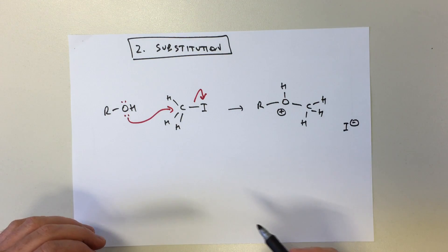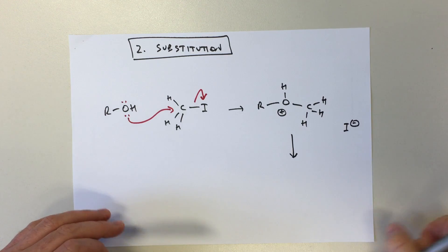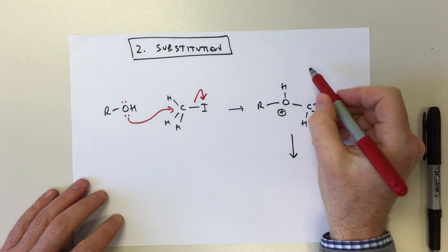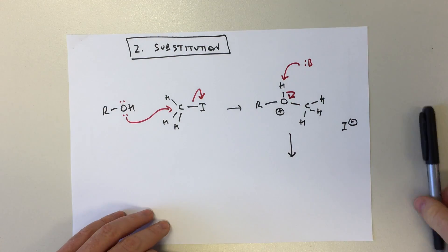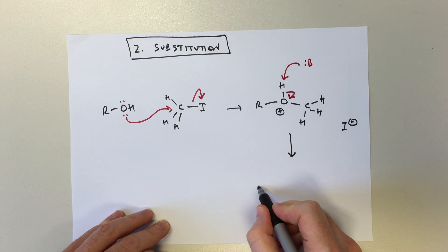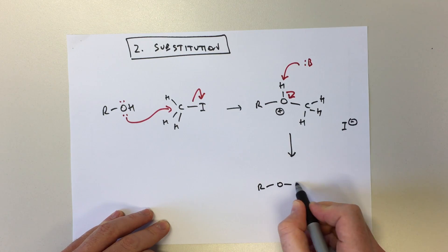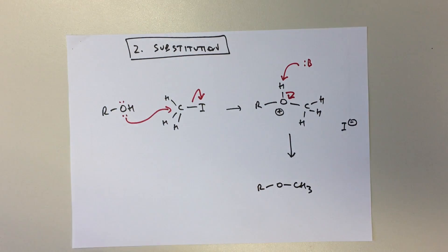And in a second boring acid base step some random base is going to come along and simply deprotonate to get this as our final neutral product.